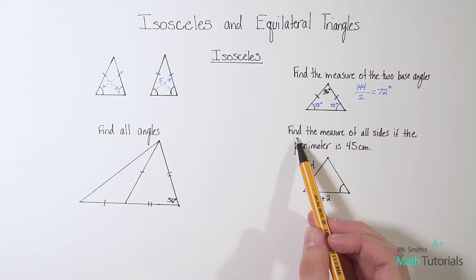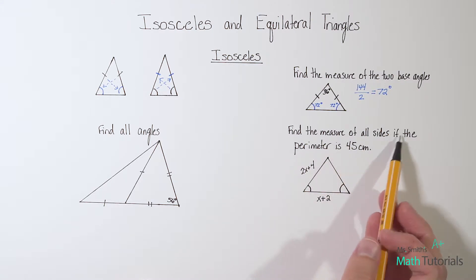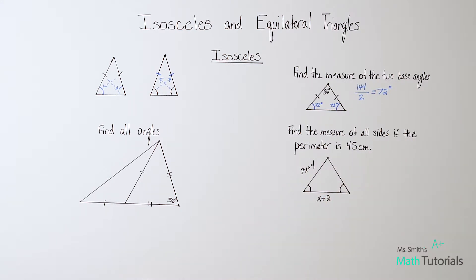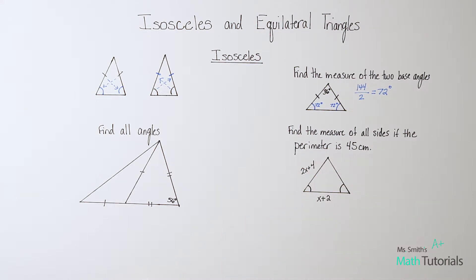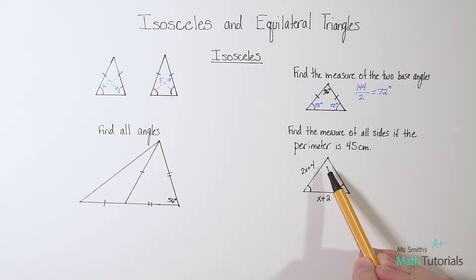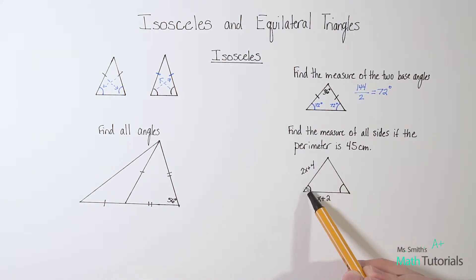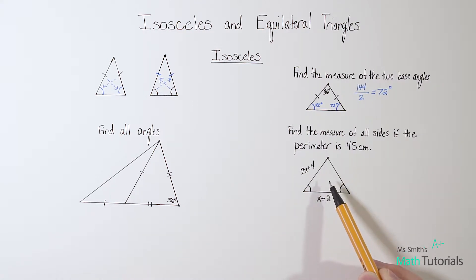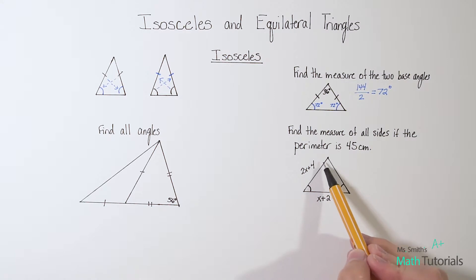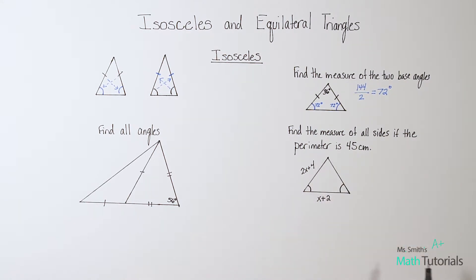Let's look at this next one: find the measure of all sides if the perimeter is 45 centimeters. Perimeter — I always think of it like fencing. If my backyard was triangle-shaped, I'm adding up the whole fence line around the outside. I'm not finding the area or multiplying. I'm just adding the outer lining. So they're telling me that the perimeter of this whole triangle is 45 centimeters.